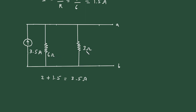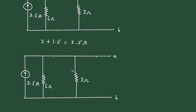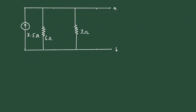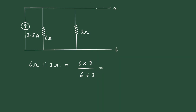Here we can see this 6 ohm and 3 ohm are connected in parallel. So it will be 6 into 3 divided by 6 plus 3, which gives 2 ohm. So we can erase this one and make it 2 ohm.